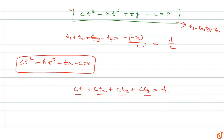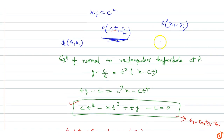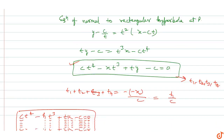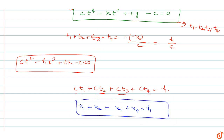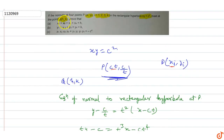Multiplying through by c: ct₁+ct₂+ct₃+ct₄ equals h. Since ct₁, ct₂, ct₃, ct₄ are the x-coordinates of the points, replacing them gives x₁+x₂+x₃+x₄ = h. So the first part is proved: x₁+x₂+x₃+x₄ = h.